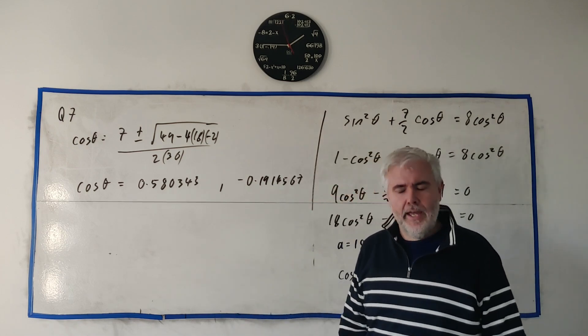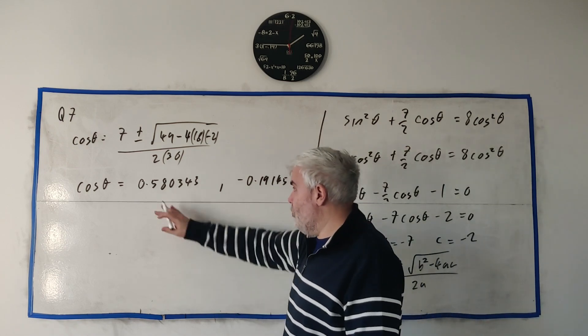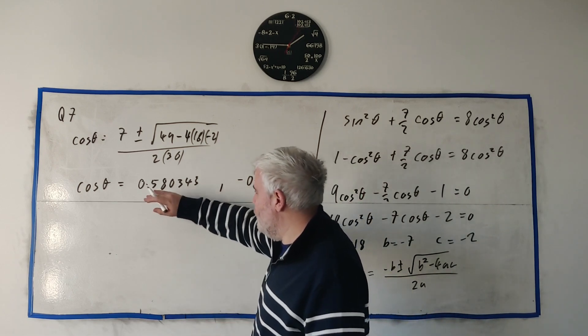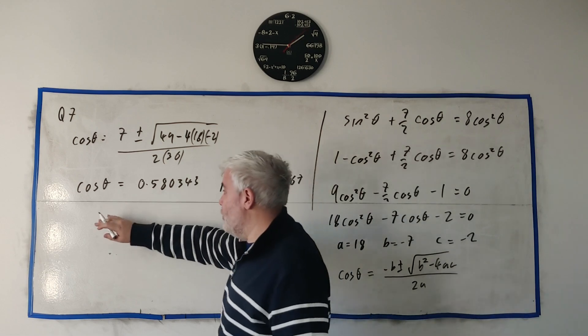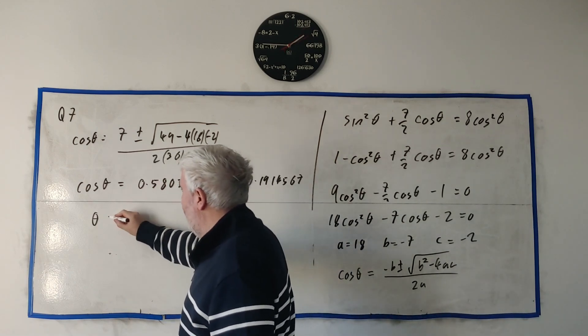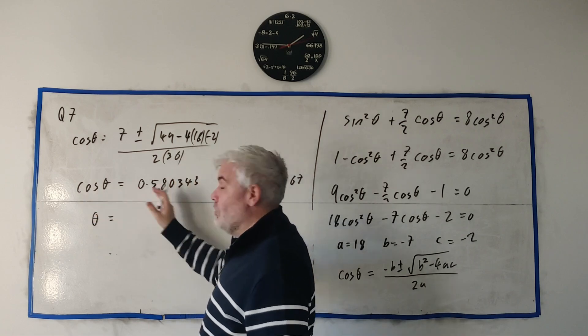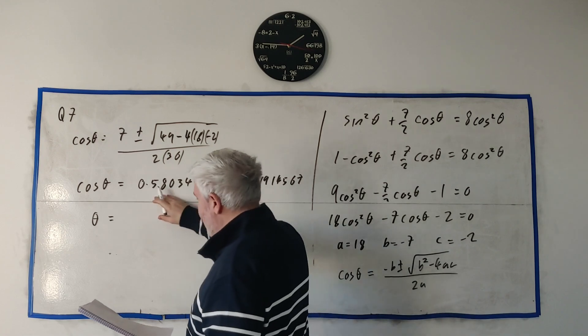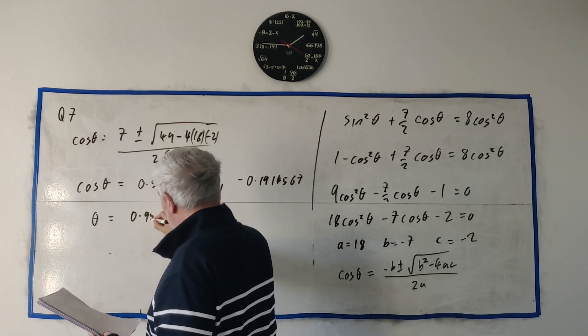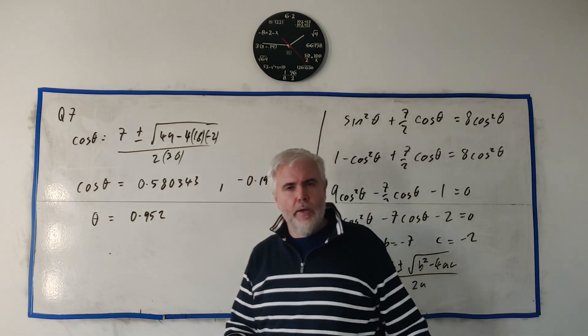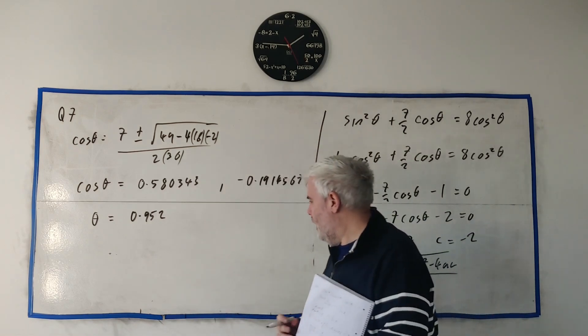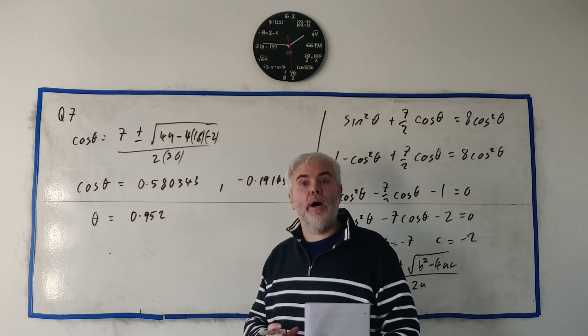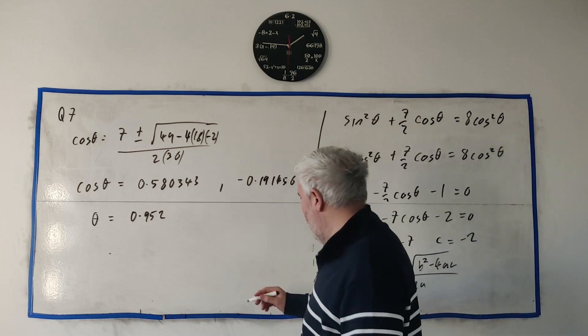And if you do that, we'll end up getting cosine θ, we'll get two answers. We'll get 0.580345. I'm taking loads of decimal places because we want our next answer to be correct to 3. Personally, what I do is I use this in my calculator now and then come back later to get the second answer minus 0.191456.